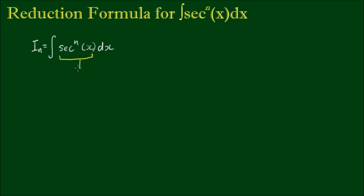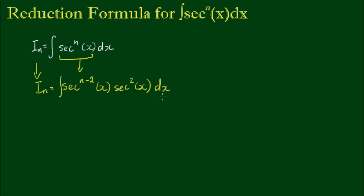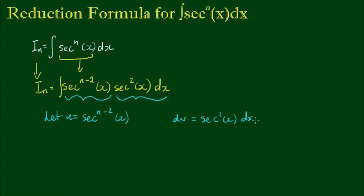The integrand is secant to the power of n. Let's take a sec squared out of it and rewrite this as secant to the power of n minus 2, multiplied by sec squared. The integral is then the product of the n minus 2 power part and the sec squared part. We let u equal sec to the n minus 2 power, and we let dv equal sec squared x. We're going to use integration by parts.